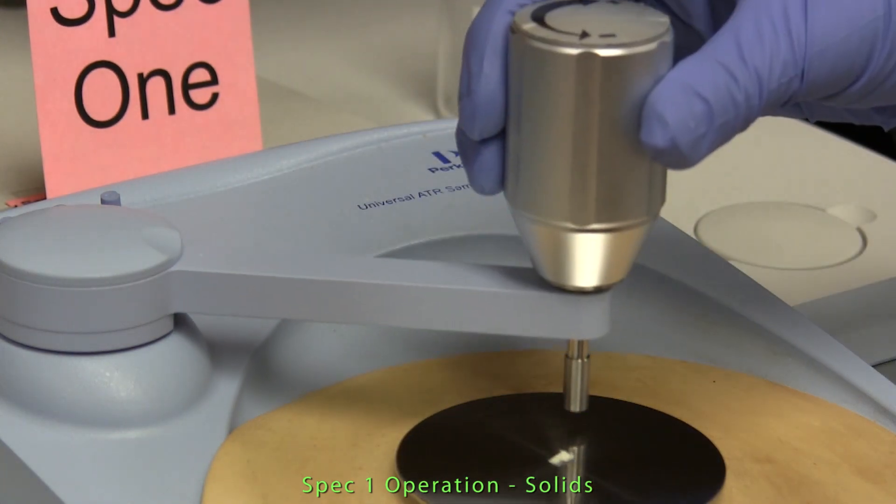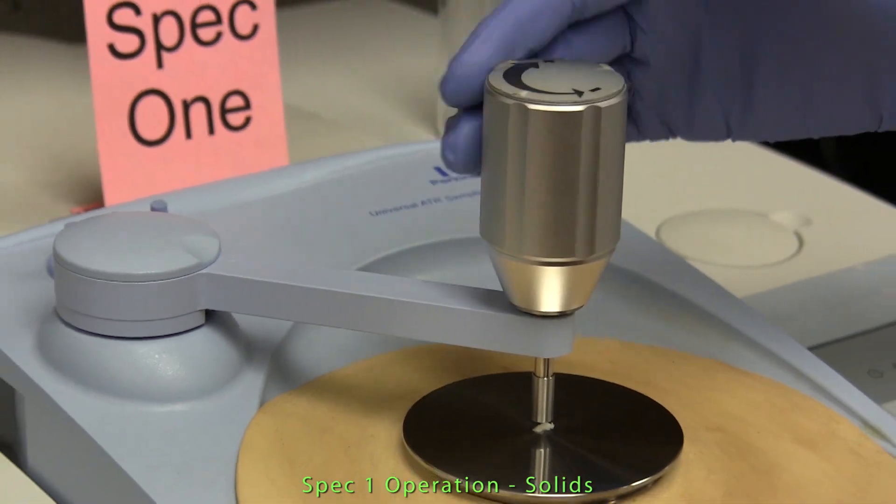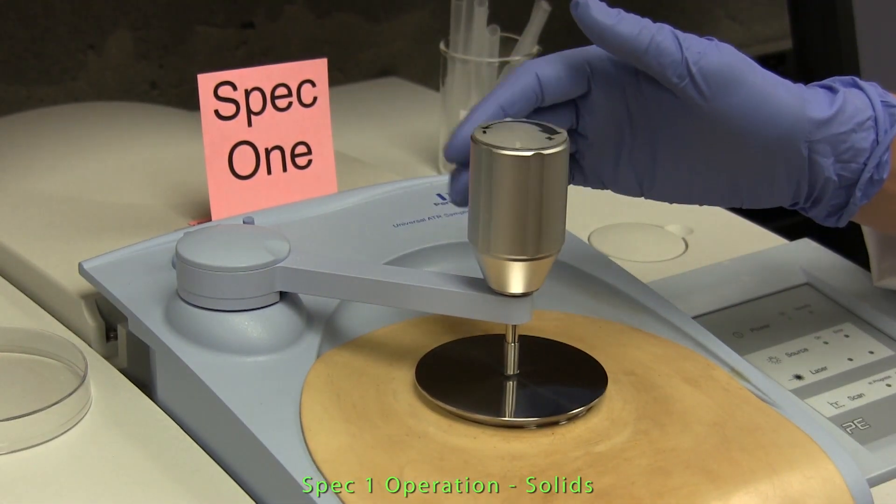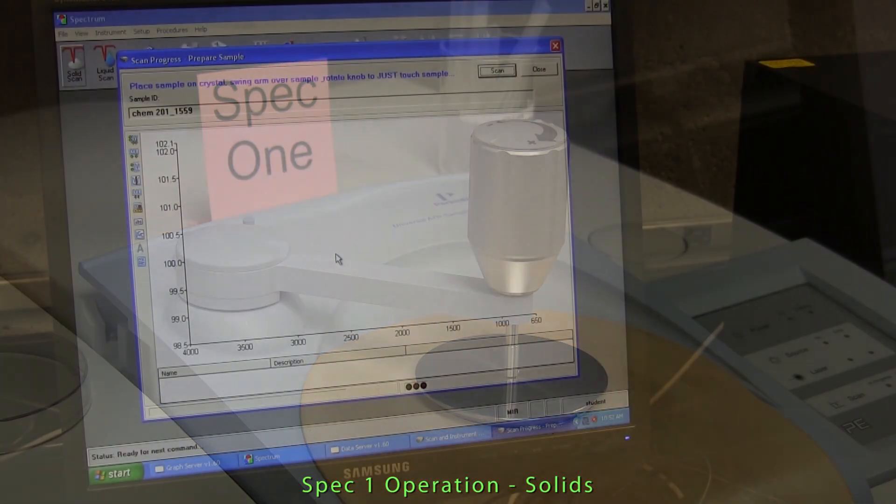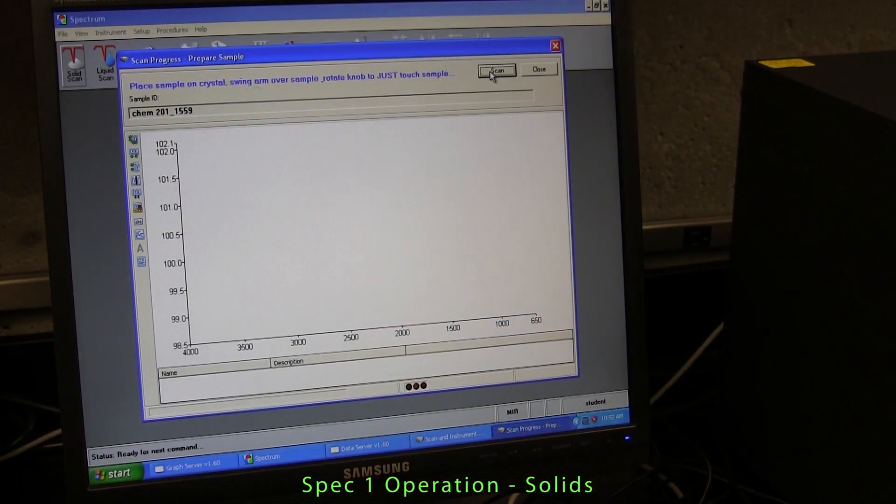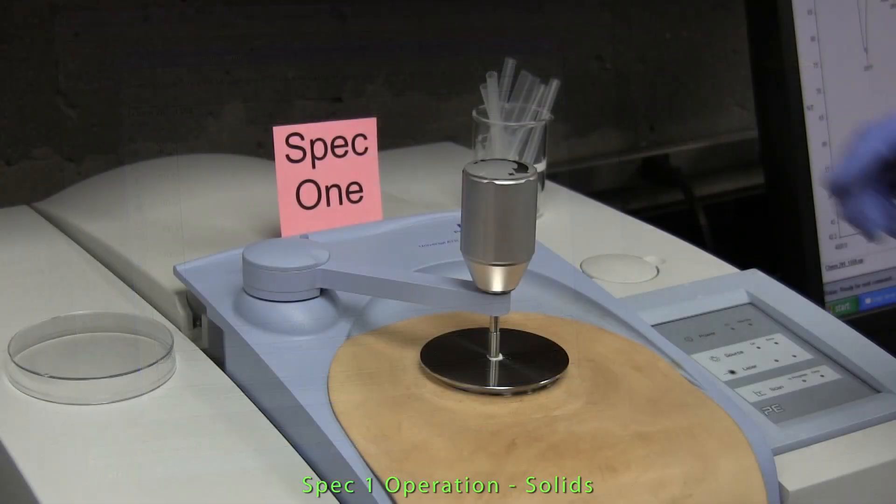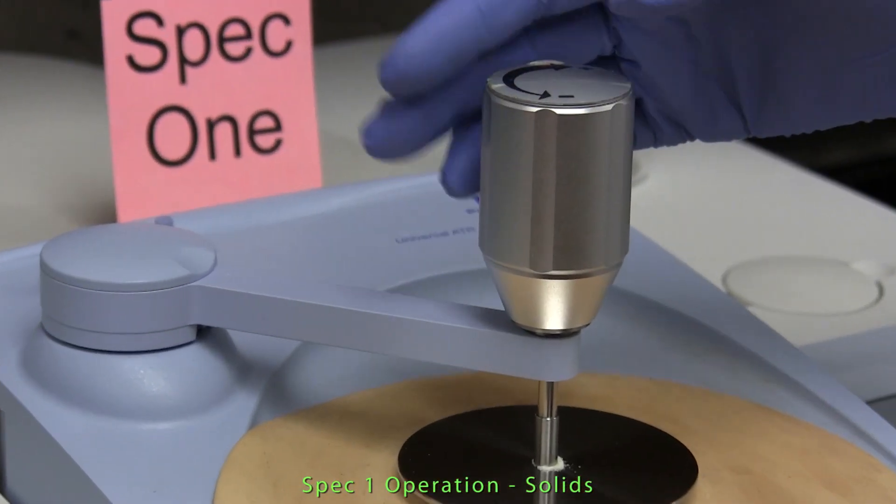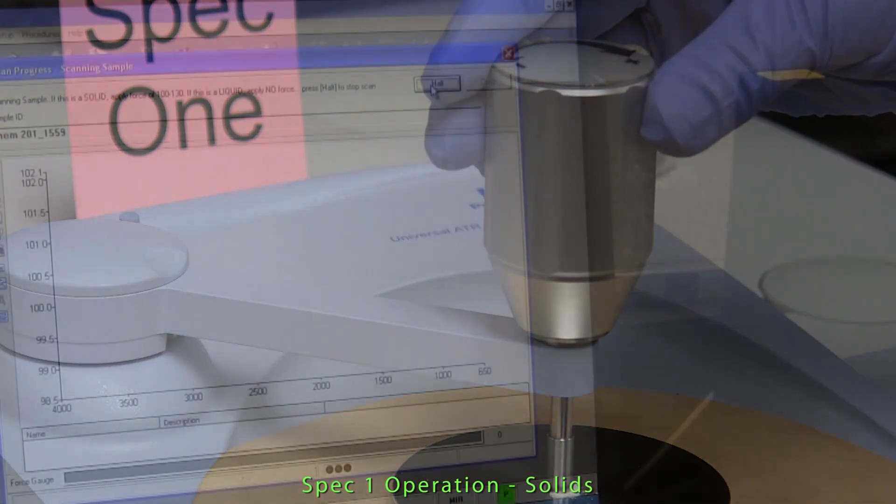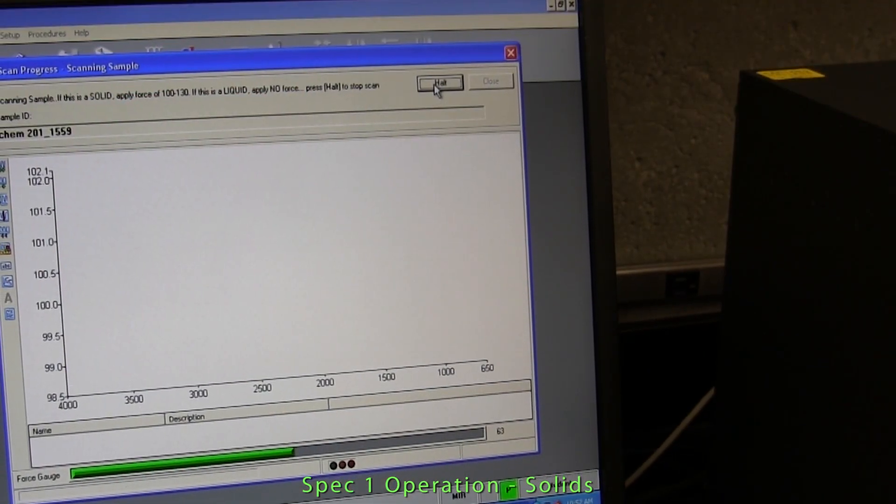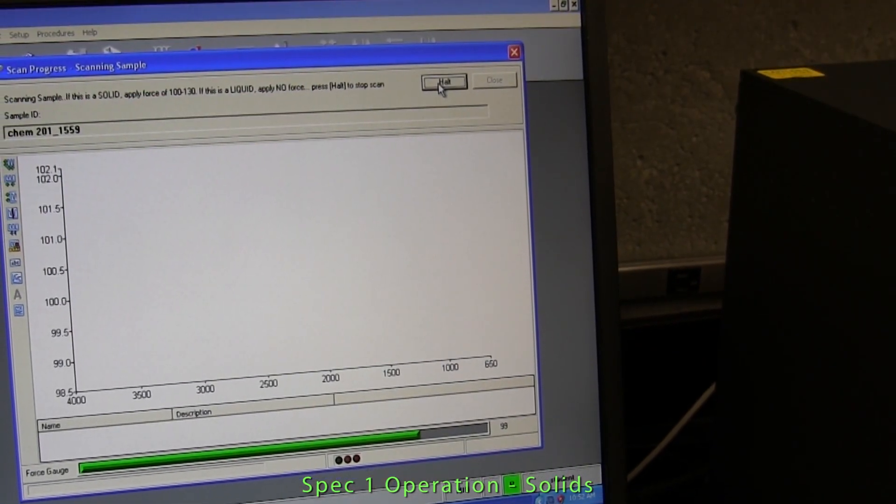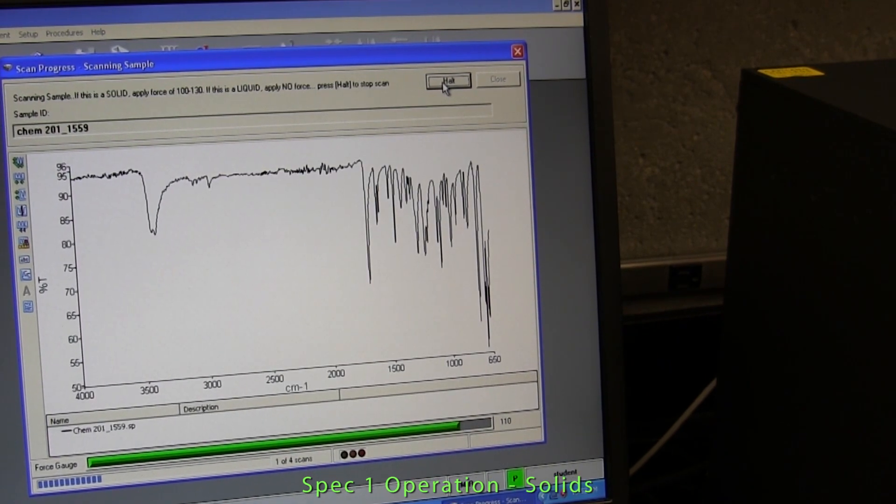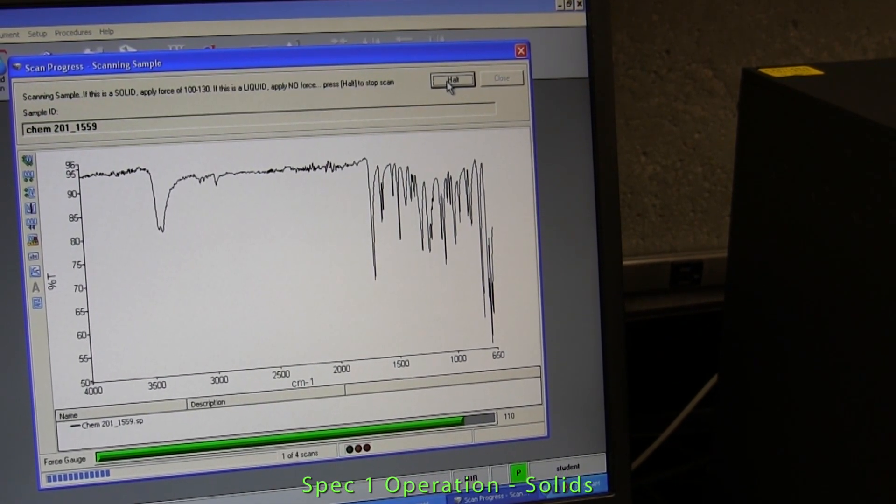The pressure arm is swung over the top of the sample and the knob rotated until it just touches the sample. When you click on the scan icon, you should rotate the pressure arm knob again, this time until the force gauge indicates a pressure of between 100 and 130. The force gauge is visible as a green bar at the bottom of the screen, which shows the spectrum being collected.